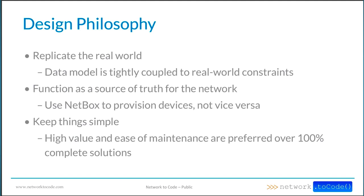This concept of modeling the real world also means that sometimes you can't restrict things. As an example, a VRF — a virtual routing and forwarding table — may or may not be allowed to have duplicate prefixes and IP addresses. There are solid use cases in the real world where sometimes you want to restrict that and sometimes you don't. NetBox does give you the option of enforcing it either way.